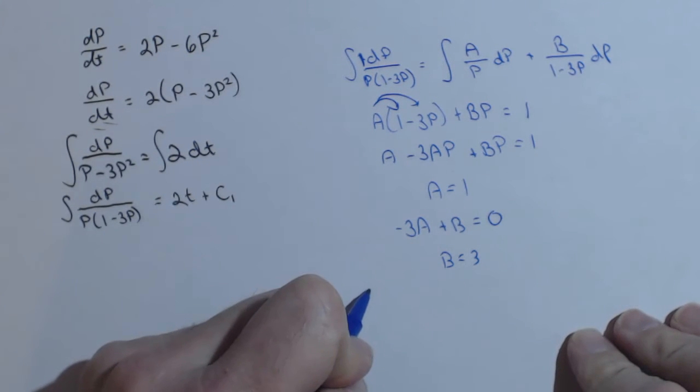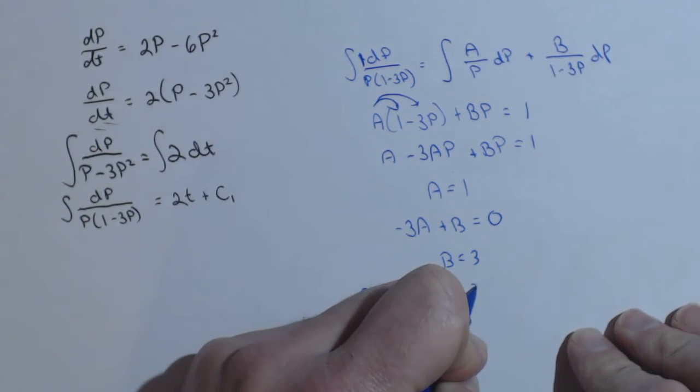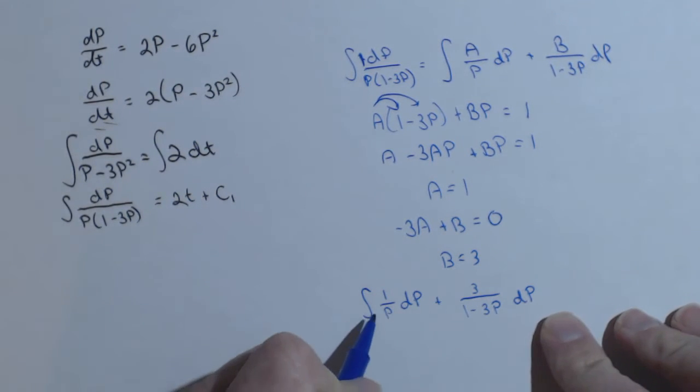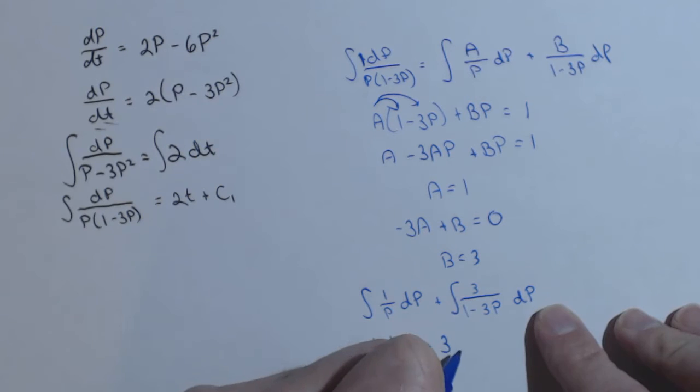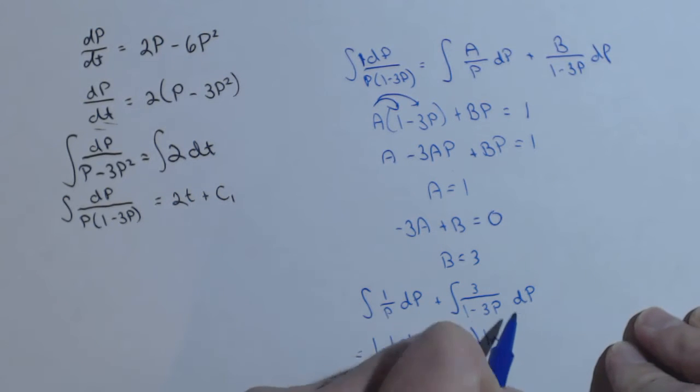Which means we are looking at the integral of 1 over p dp plus 3 over 1 minus 3p dp. Let's do them separately. So this one is pretty straightforward. It's just natural log of the absolute value of p. This one, well, we're going to have the 3 in there. This antiderivative will be a natural log, but because of that minus 3p, we're going to end up with a negative 1 third out front, and then ln of 1 minus 3p.